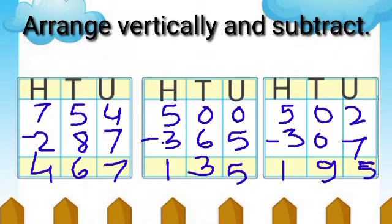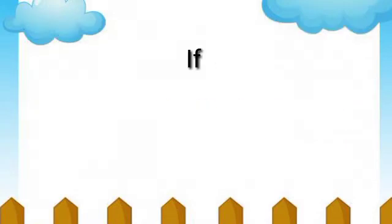Next: 500 minus 365 equals 135. Next: 502 minus 307 is equal to 195.